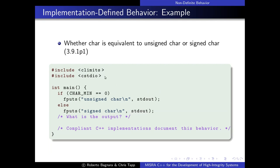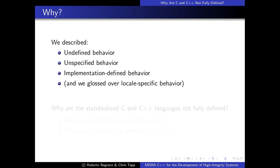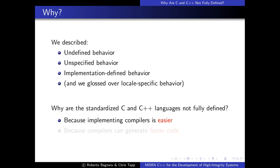Why are C and C++ not fully defined? There is also locale-specific behavior, which is another variety, though not very important here. The main reason is that implementing compilers—particularly efficient compilers that generate fast code—is easier when some categories of behavior are not completely defined. The other reason is that this ensures portability also to very small machines.